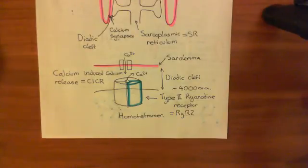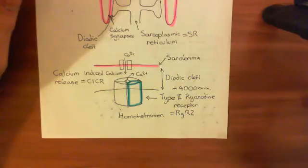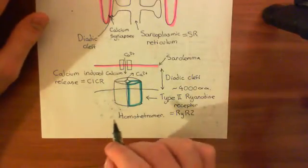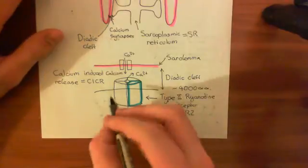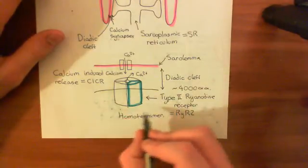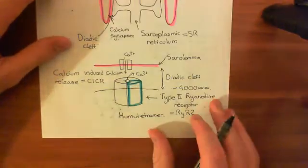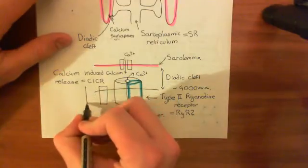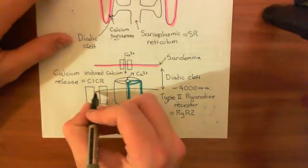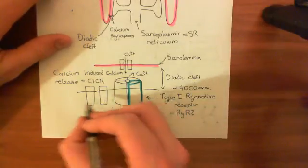A little more detail: the way type 2 ryanodine receptors release calcium so quickly is that they are associated with proteins which are themselves associated with another protein that has calcium bound to it. There is basically a complex of proteins nearby these type 2 ryanodine receptors. There are two proteins that complex with the type 2 ryanodine receptor, and these two bind to another protein which then binds to calcium.